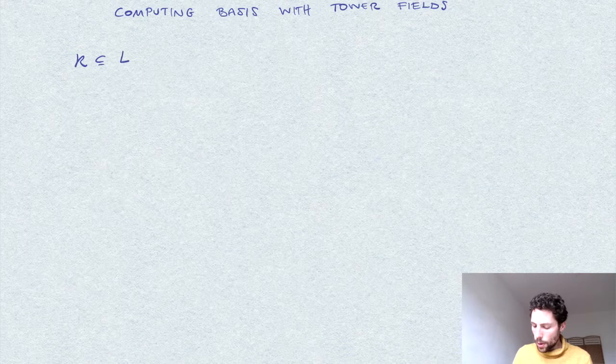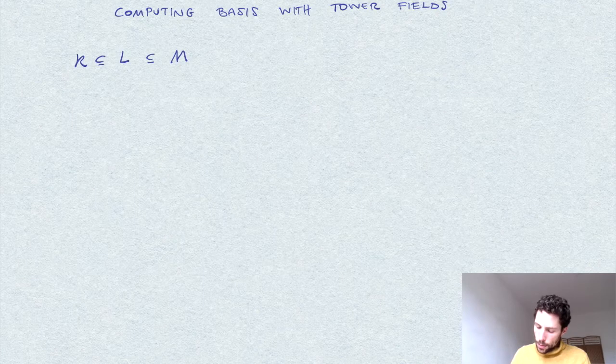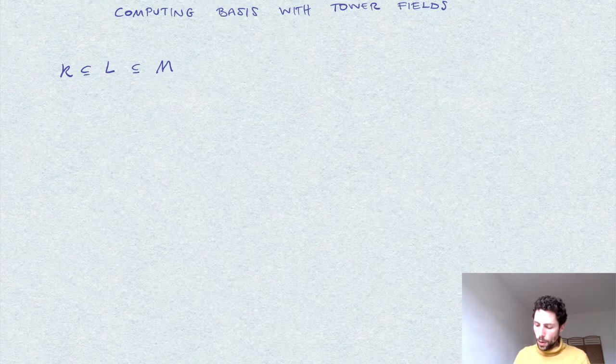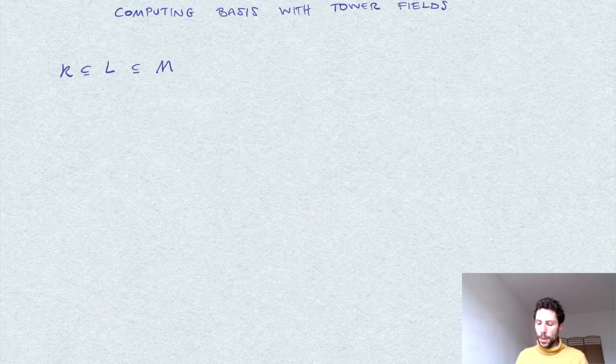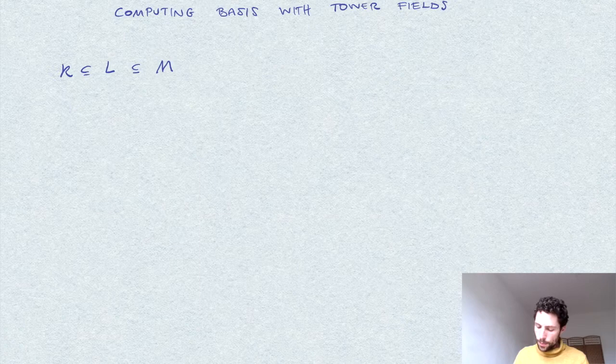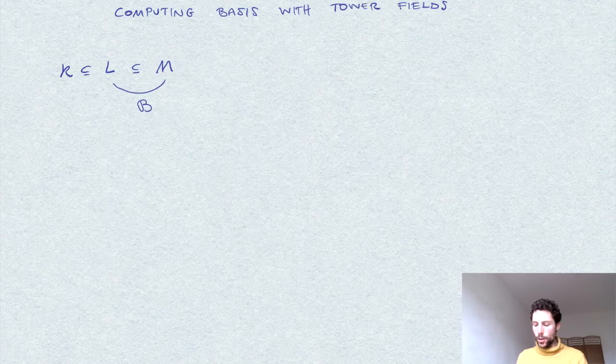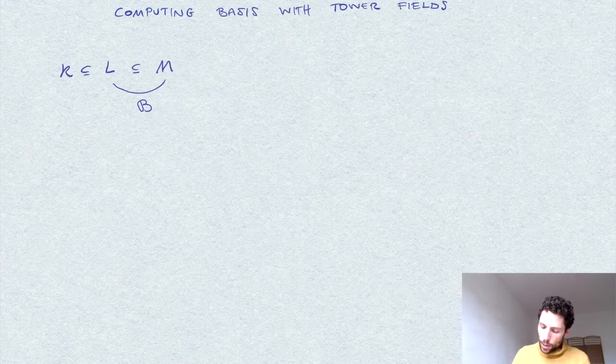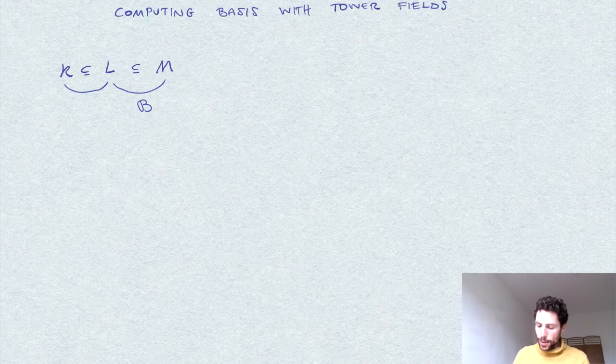k into L, L into M, and suppose that we know the basis of the vector space M over L. Let's call this basis B, a set of vectors which generates M as a vector space over the field L, and we also know the basis of L as an extension of k. Let's call this A.